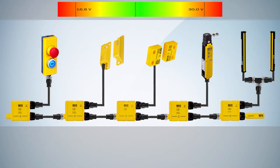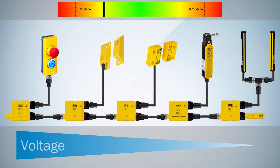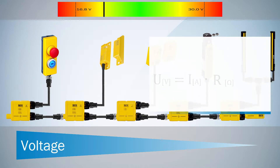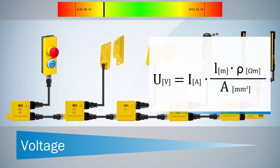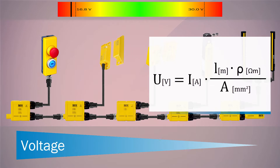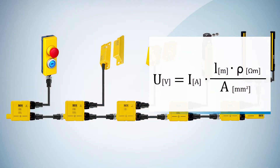On the other side, the voltage decreases along the cascade due to the voltage drop over the cables. The voltage drop is defined by the current and the cable resistance, which depends on the wire diameter, the cable length and the temperature. These circumstances may lead to the fact that nodes are not sufficiently supplied with the necessary minimum voltage. To reduce the voltage drop, you could for example increase the wire diameter or reduce the cable length, so that the resistance is decreased.